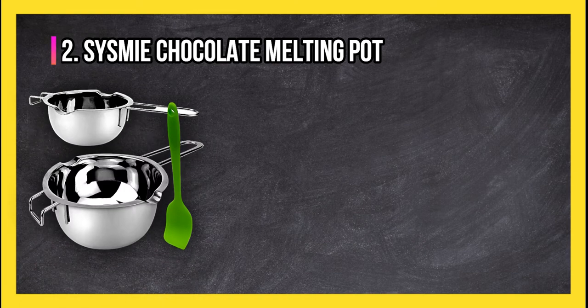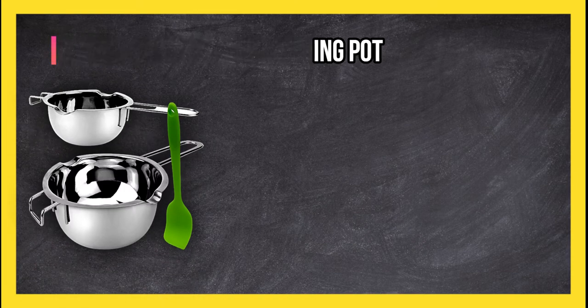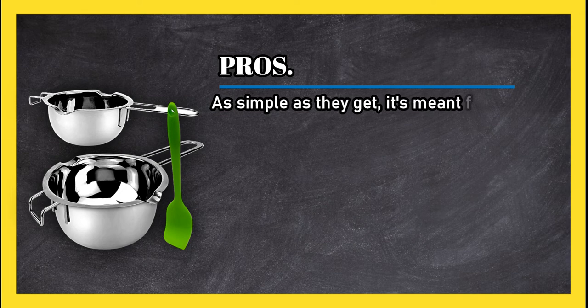At number two, Seismic chocolate melting pot. Pros: as simple as they get, it's meant for use with a small saucepan and includes a nonstick spatula, works great with a small whisk.